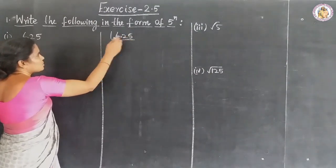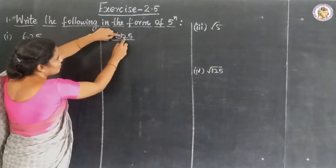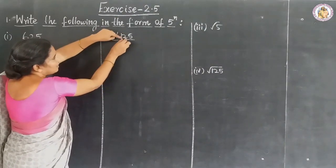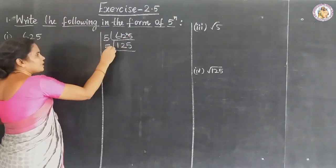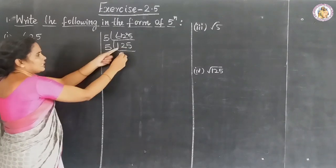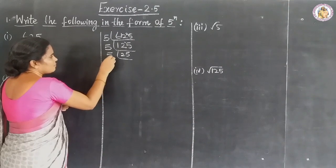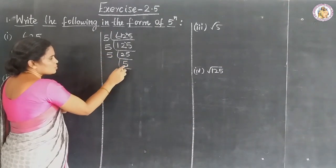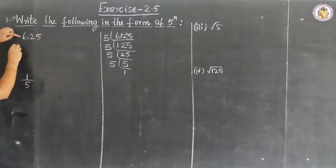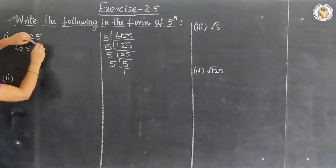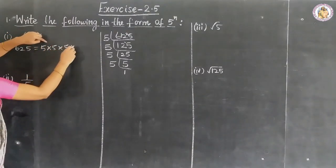The last digit is 5, so we use the 5 times table to find the LCM. Dividing: 5 fives are 25, again 5 fives are 25, again 5 fives are 25, and 5 ones are 5. So 625 equals 5 × 5 × 5 × 5.